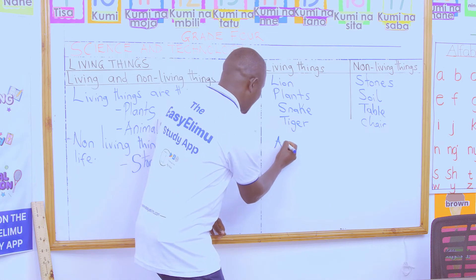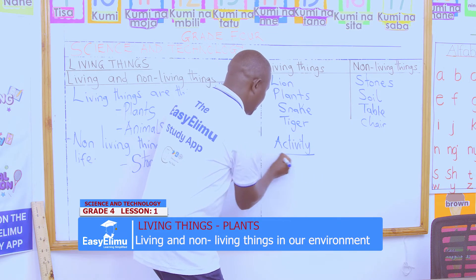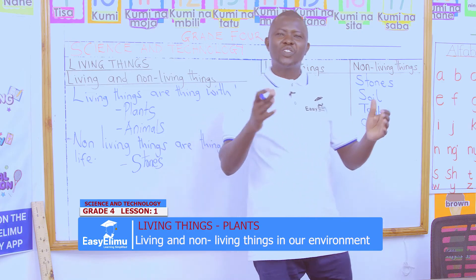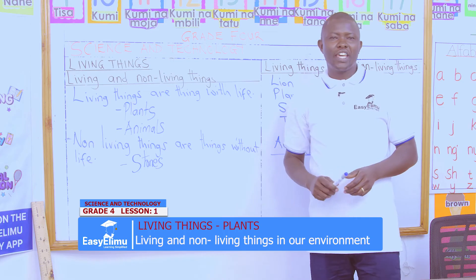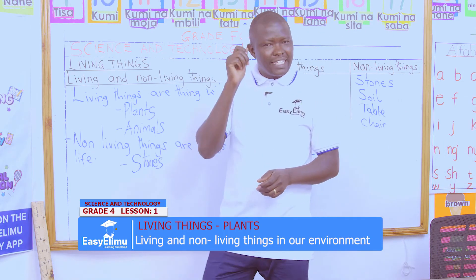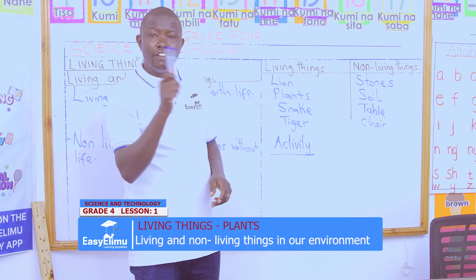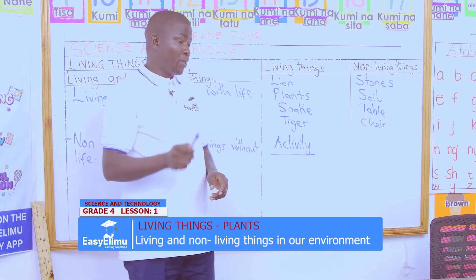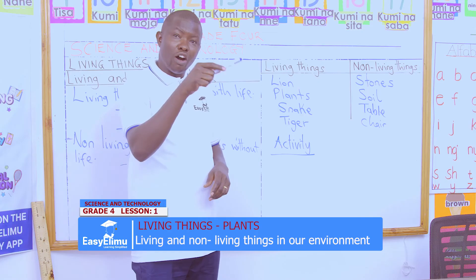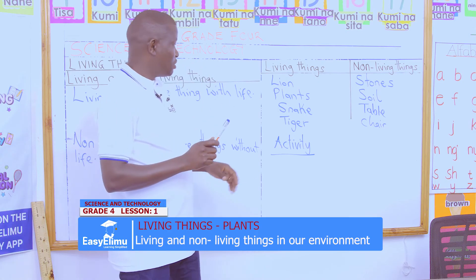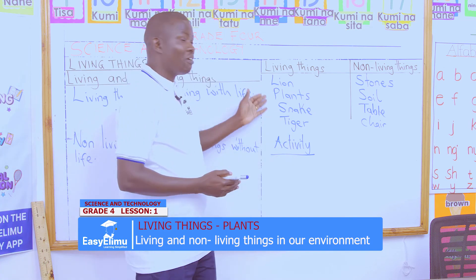Now I want us to do this activity. When you go home, with the help of your parents, kindly identify living and non-living things in your environment. Tomorrow morning, make sure you have a table like this so we can go through each one of you and see whether you have grouped them correctly.